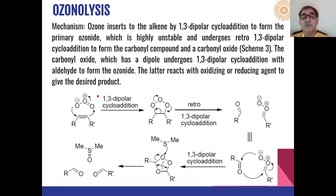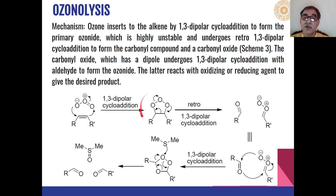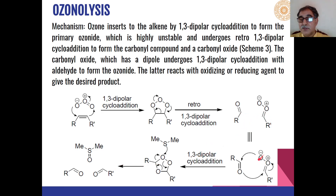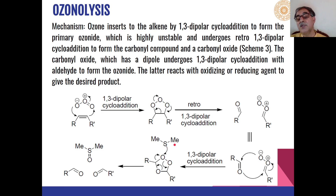The mechanism of ozonolysis is that ozone adds to the carbon-carbon double bond in an example of 1,3-dipolar cycloaddition, giving an ozonoid as the intermediate. This ozonoid then undergoes breaking of the carbon-carbon bond with removal of a hydroperoxide fragment to give carbonyl compounds. The carbonyl oxide then adds again to the carbonyl compound to form a new ozonoid, which on reductive or oxidative workup leads to formation of different types of carbonyl products.